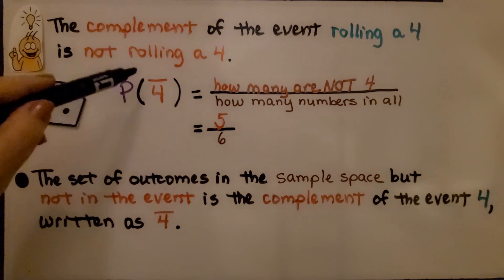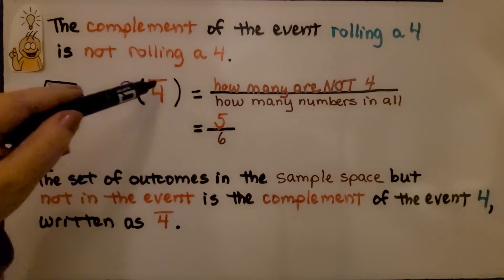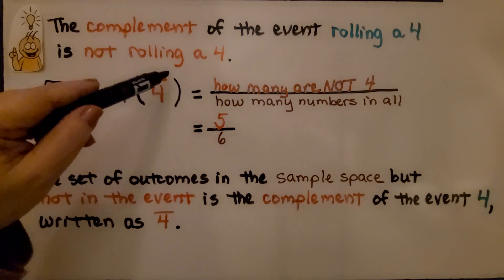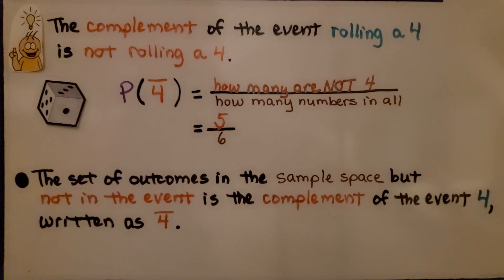This means the complement. When we have P, open parentheses, and then our event with the bar over the top, and then close parentheses, that means we're looking for the complement.